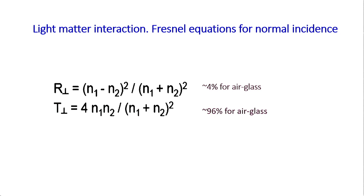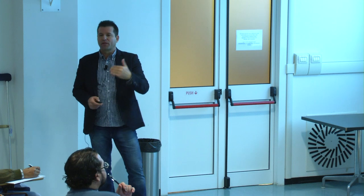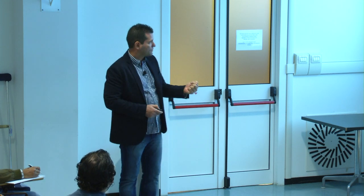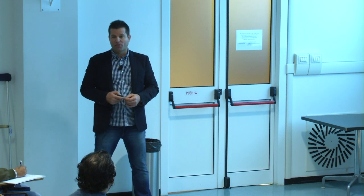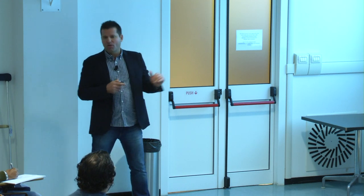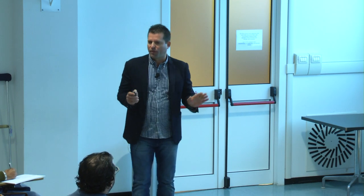Snell's law only gives a qualitative description of the direction of propagation. For a quantitative description of the amount of light reflected or transmitted, we use the Fresnel equations. For normal incidence on a microscope slide, 4% of the light at each air-glass surface will be reflected. We can change this proportion by changing the angle — there is a formula for that in the Fresnel equations.